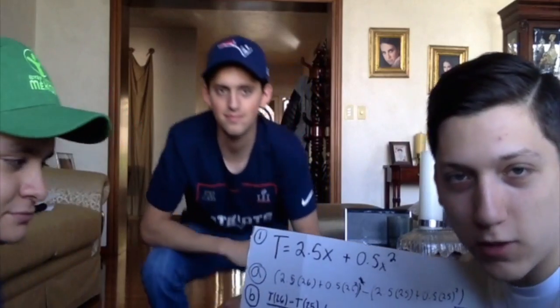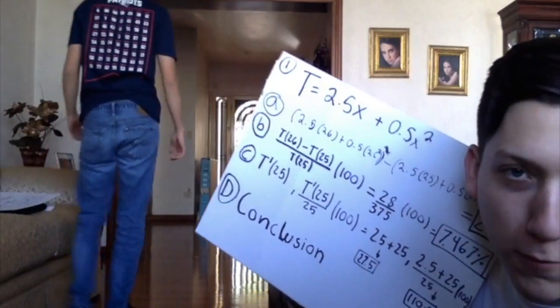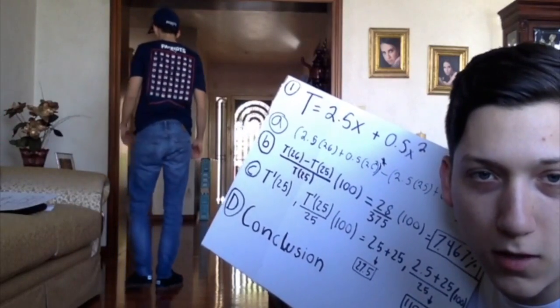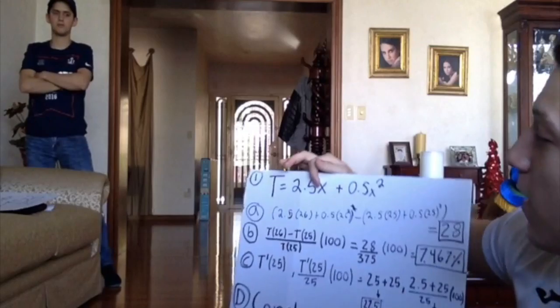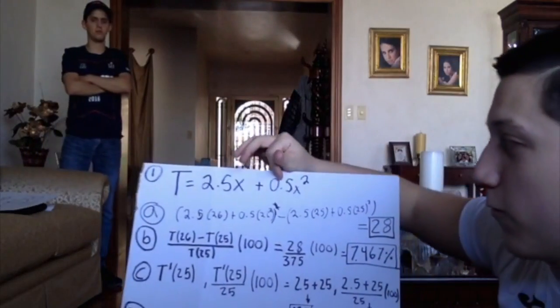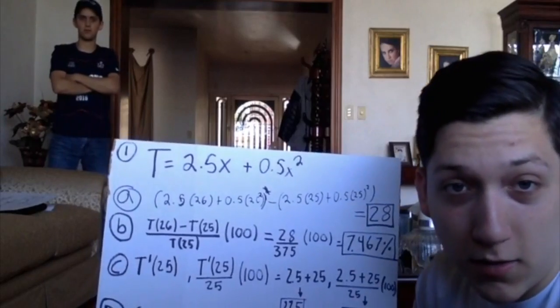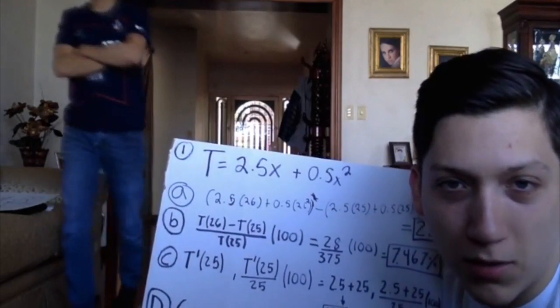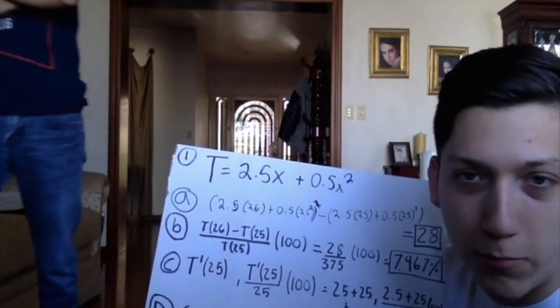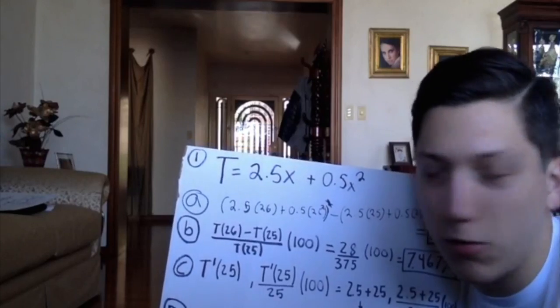So the first problem is the total stopping distance t of a vehicle is equal to the formula 2.5x plus 0.5x squared. And in number a, we need to give the change in the stopping distance as speed changes from x equals 25 to x equals 26 miles per hour.